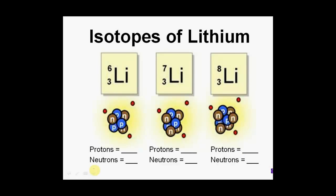Okay, here's lithium. Lithium occurs in three different varieties: lithium-6, lithium-7, and lithium-8, those being the masses. How do I know it's lithium? Every one of these pictures has three protons — three protons, three protons, three protons. Isotopes have the same number of protons, but where they differ is in the number of neutrons.